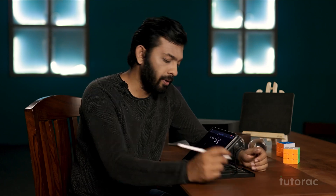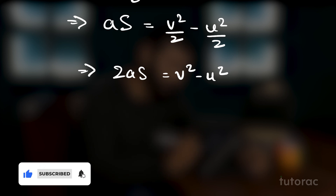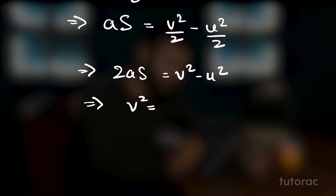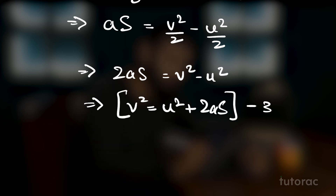Since x2 minus x1 is the displacement s, we have a·s equals v²/2 minus u²/2. Taking the factor of 2 to the left-hand side, we get 2as equals v² minus u². Rearranging, we get v² equals u² plus 2as, which is the third equation of motion.